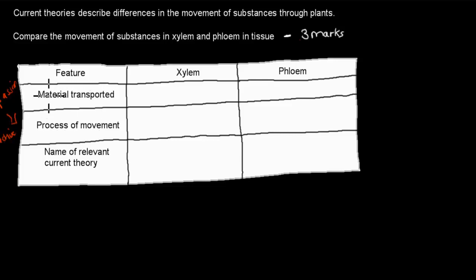Here you need to know what is transported in the actual xylem and phloem tubes. And for name of relevant current theory is what we call this movement of xylem and phloem. So that is all you have to do for this one, it's for three marks, so half a mark for each correct part here.